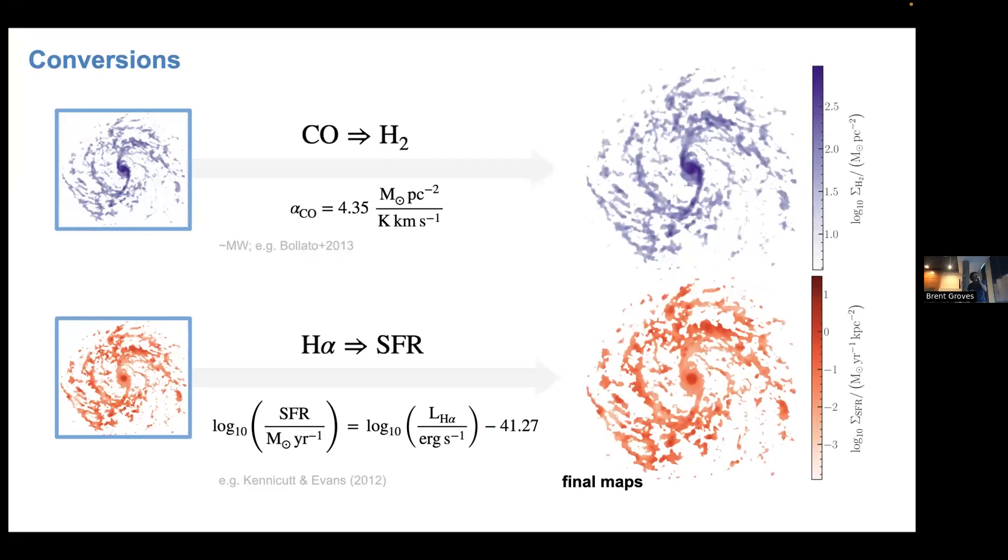So now we want to give an estimate for the galaxy average depletion time. To do so we need to perform some conversions. The first one, we take the CO luminosity and we can convert this into an H2 surface density using the CO conversion factor. Specifically here we adopted a value close to the Milky Way average.